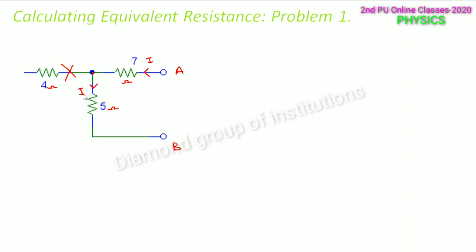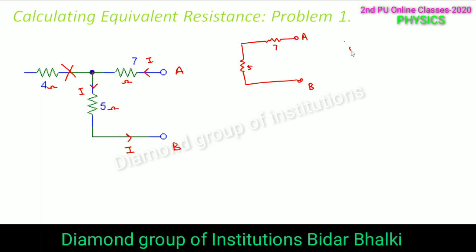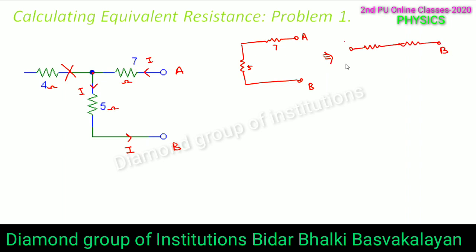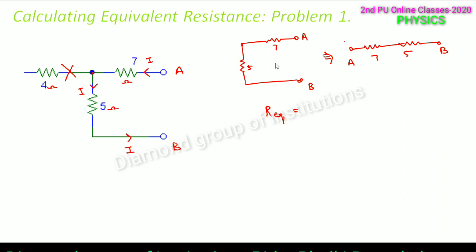Since no current flows through the 4 ohm resistor, it does not contribute to the equivalent resistance. The entire current flows through the 5 ohm resistance. So the circuit reduces to 7 ohms and 5 ohms connected in series between A and B. Since they are in series, the equivalent resistance is simply their sum. Therefore the equivalent resistance of the circuit is 12 ohms.